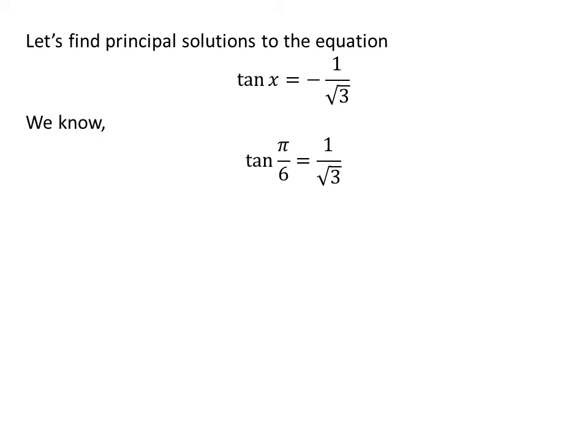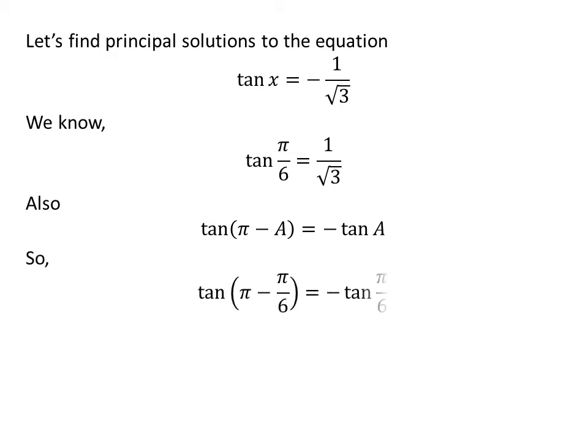We know the value of tangent of π/6 is 1 upon square root of 3. We also know the trigonometry identity tangent of (π minus a) is equal to minus tangent of a. The proof of this identity is given in the video appearing in the upper right corner, and the link is also given in the description section. Applying this identity gives us tangent of (π minus π/6) is equal to minus tangent of π/6.